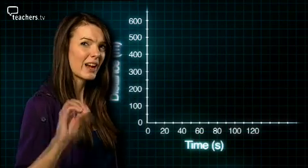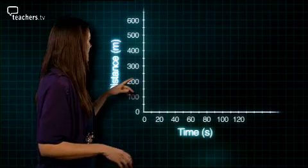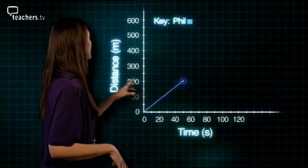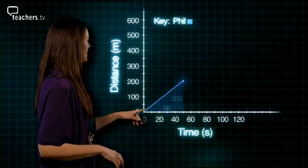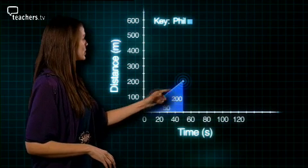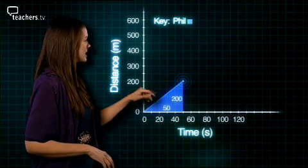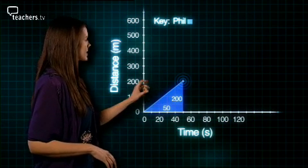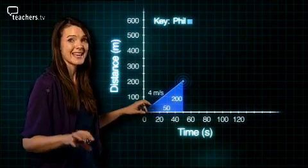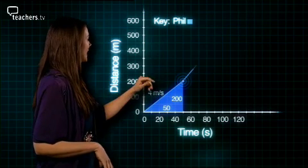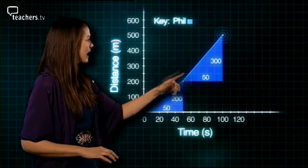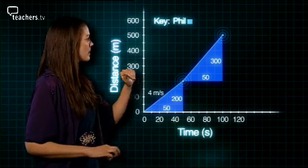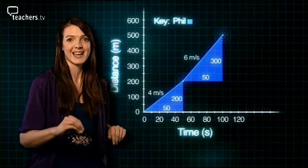It doesn't look like Dave is much of a rower either, and I bet the graph shows us that as well. Let's have a look at Phil's distance-time graph first. In the first leg of his journey he has travelled 200 metres in 50 seconds, at a constant speed of 4 metres per second. In the second leg, he has travelled 300 metres in 50 seconds, at a constant speed of 6 metres per second.